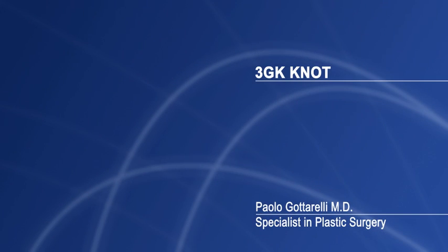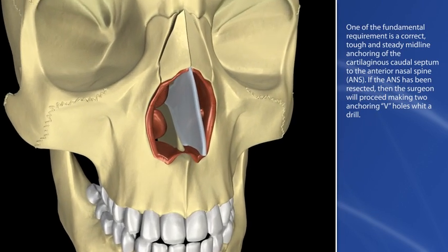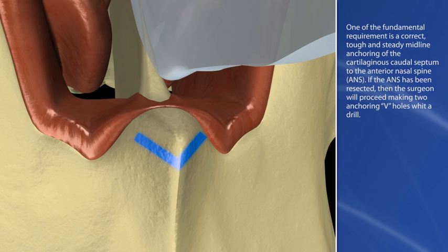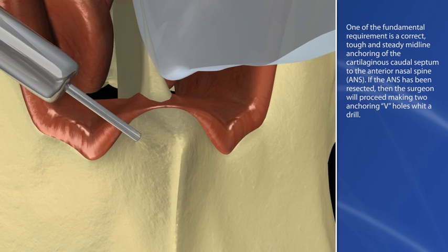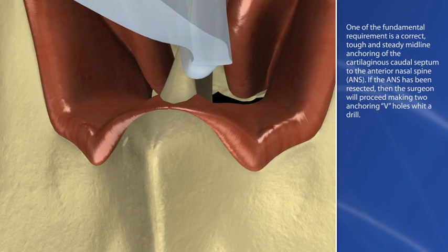One of the fundamental requirements is a correct, tough, and steady midline anchoring of the cartilaginous caudal septum to the anterior nasal spine, ANS. If the ANS has been resected, then the surgeon will proceed making two anchoring V-holes with a drill.